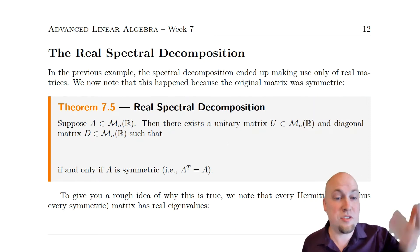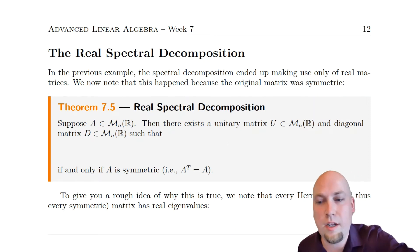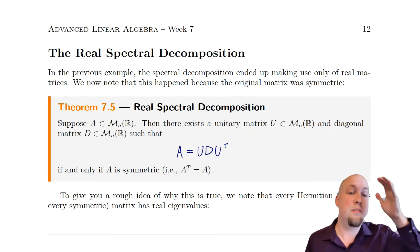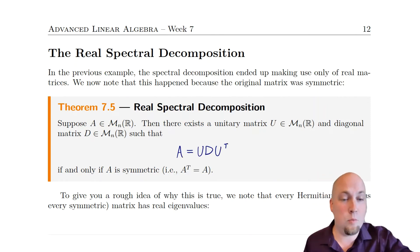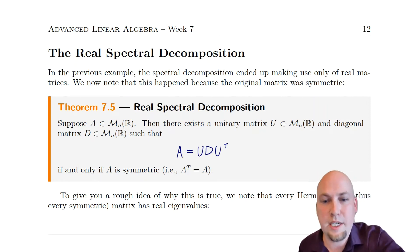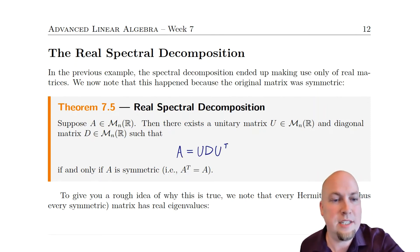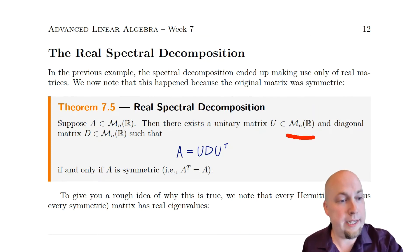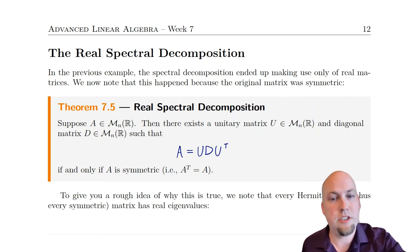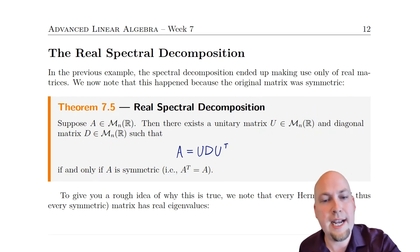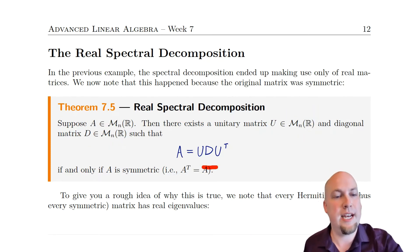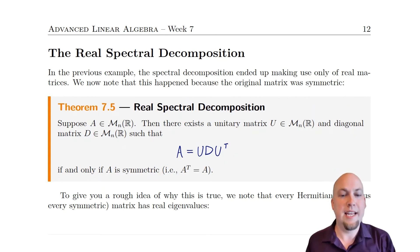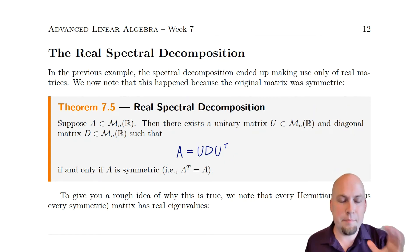In this first theorem we'll start off with the answer. Suppose you have some real matrix — well, then there exists a real unitary matrix U and a real diagonal matrix D such that A equals UDU transpose if and only if A is symmetric.